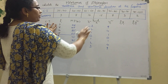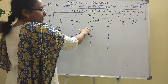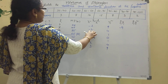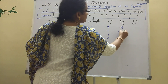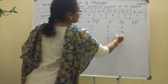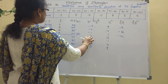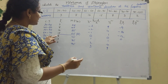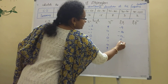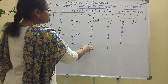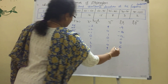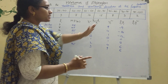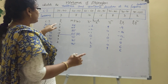Now for the fi·yi column, we multiply frequency fi by yi. So: 3 × (−3) = −9; 7 × (−2) = −14; 12 × (−1) = −12; 15 × 0 = 0; 8 × 1 = 8; 3 × 2 = 6; 2 × 3 = 6.